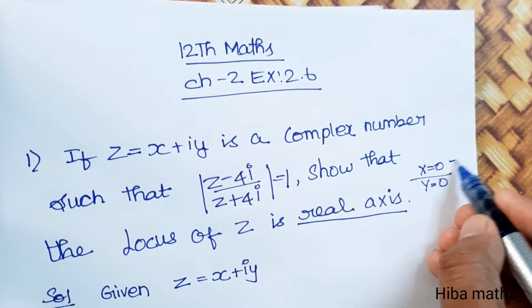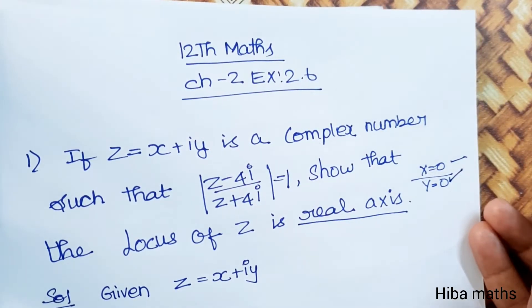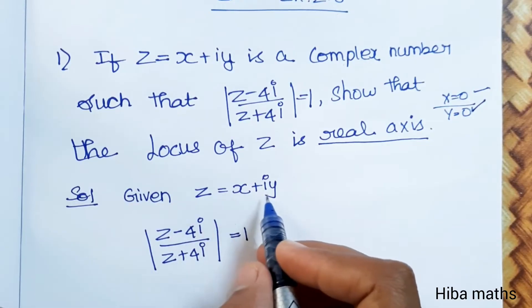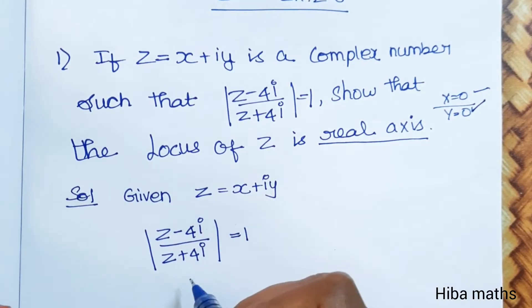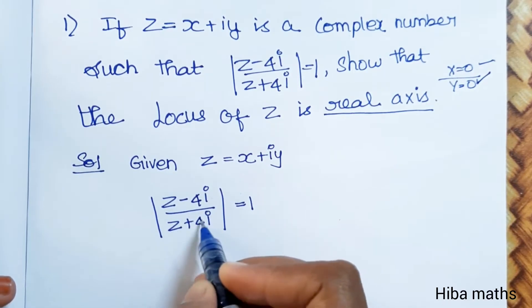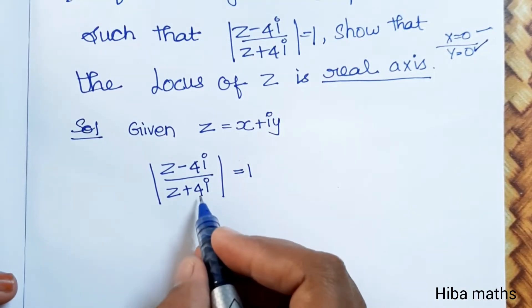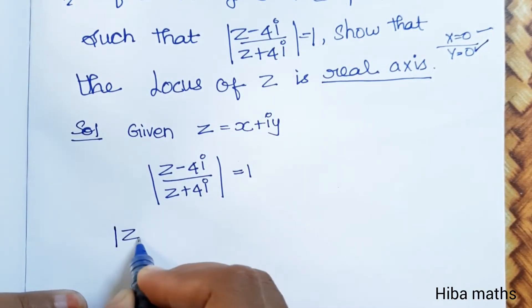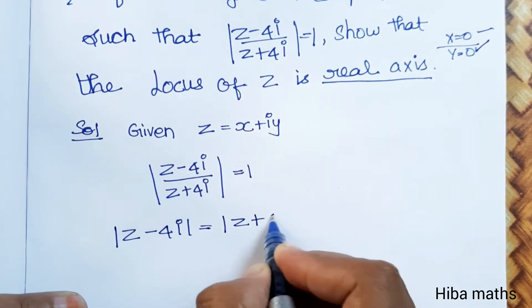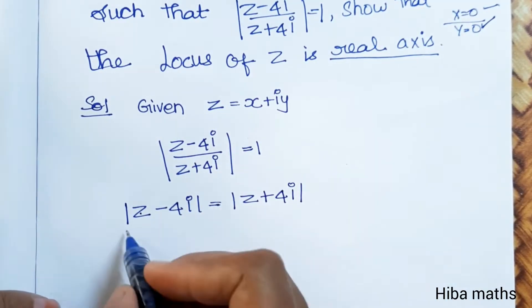Given Z equals X plus iY and the condition Z minus 4i by Z plus 4i equals 1. So what I do is write the denominator equal to the numerator. Z minus 4i equals Z plus 4i. Now Z equals X plus iY.